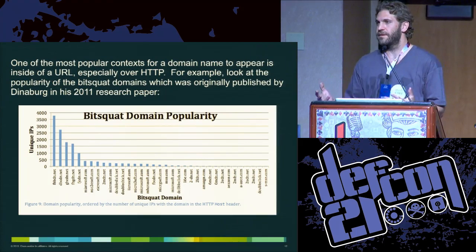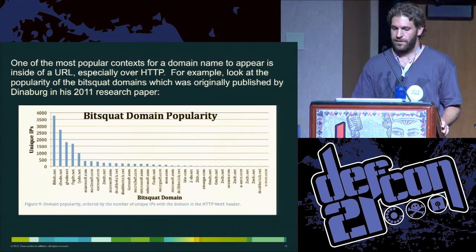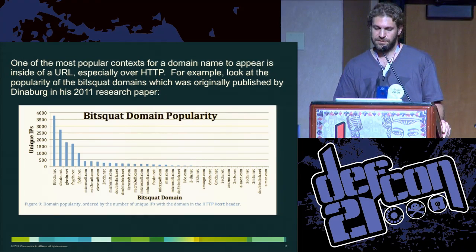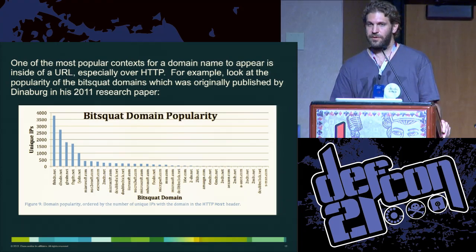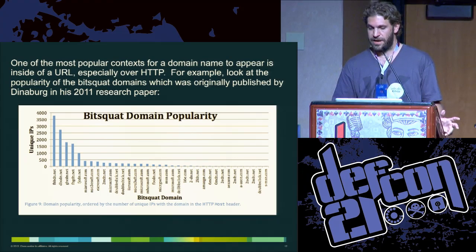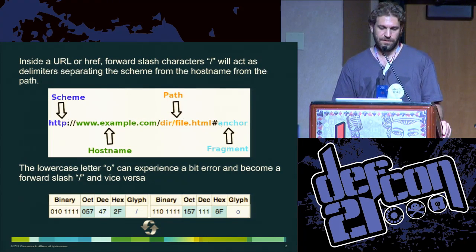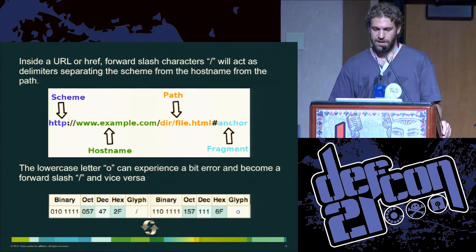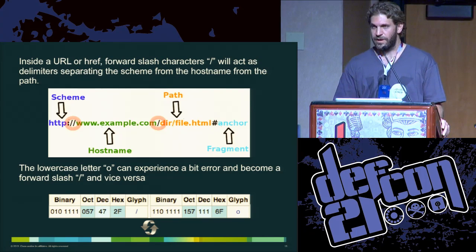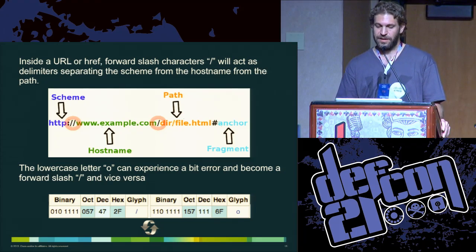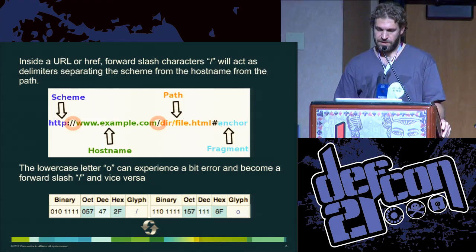Outside of the characters within a domain name itself, there are other ways we found. Part of the inspiration came from a slide originally published by Artem Dyneberg in his 2011 research — the most popular bit squat domains he registered were all associated with web applications. Thinking about the general structure for any HTTP URL — scheme, hostname, path — there are a couple of places where we have forward slashes. There's a relationship between the letter O and the forward slash where, by the flip of one bit, one becomes the other. If you've got a domain with the letter O in the right place, you can attack domains which weren't possible before.